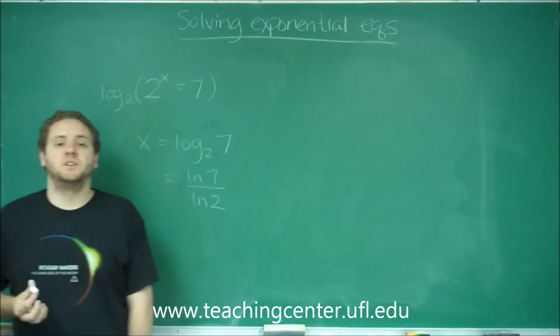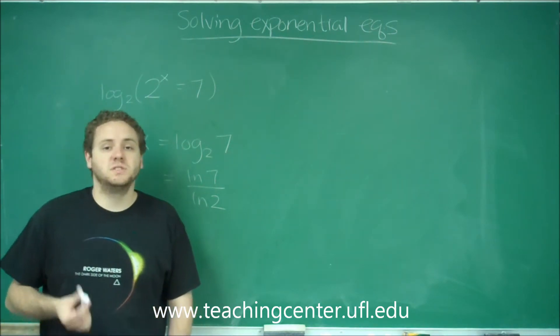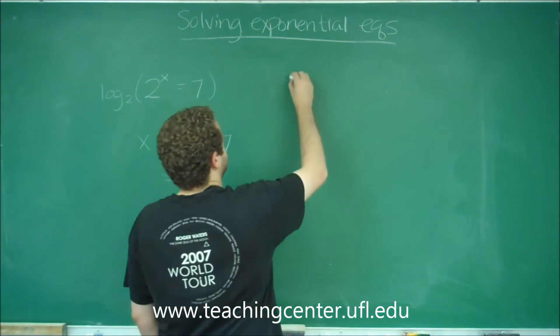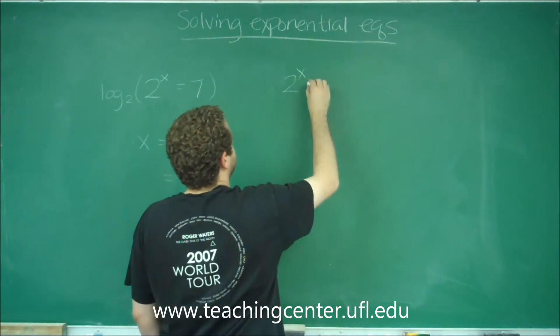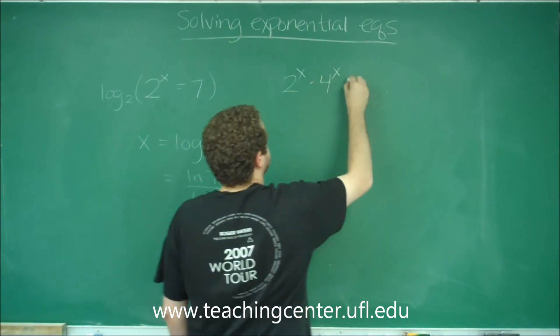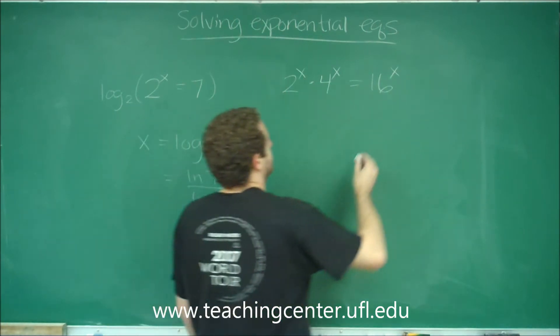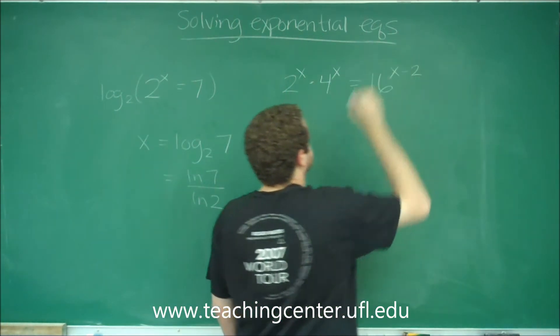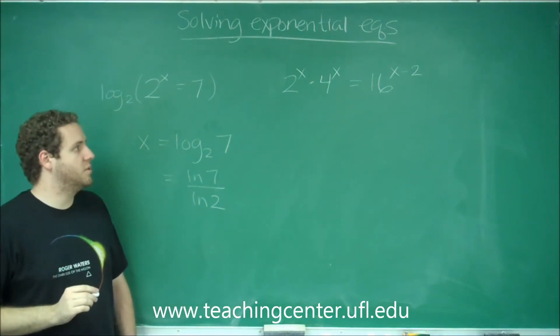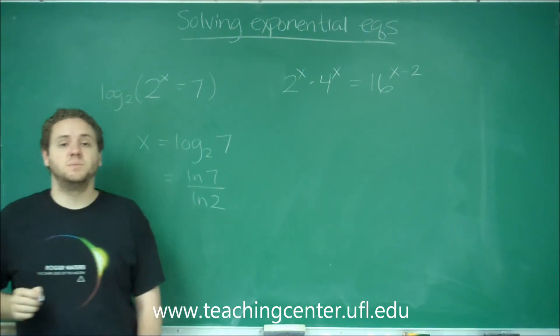So another type of equation is where you want to change all the exponential terms in the equation to have the same base. So let's say we had something like this. Let's say 2 to the x times 4 to the x equals 16 to the x minus 2. So what you want to notice here is you can't use any of your standard rules for logs or exponents because we have different bases.